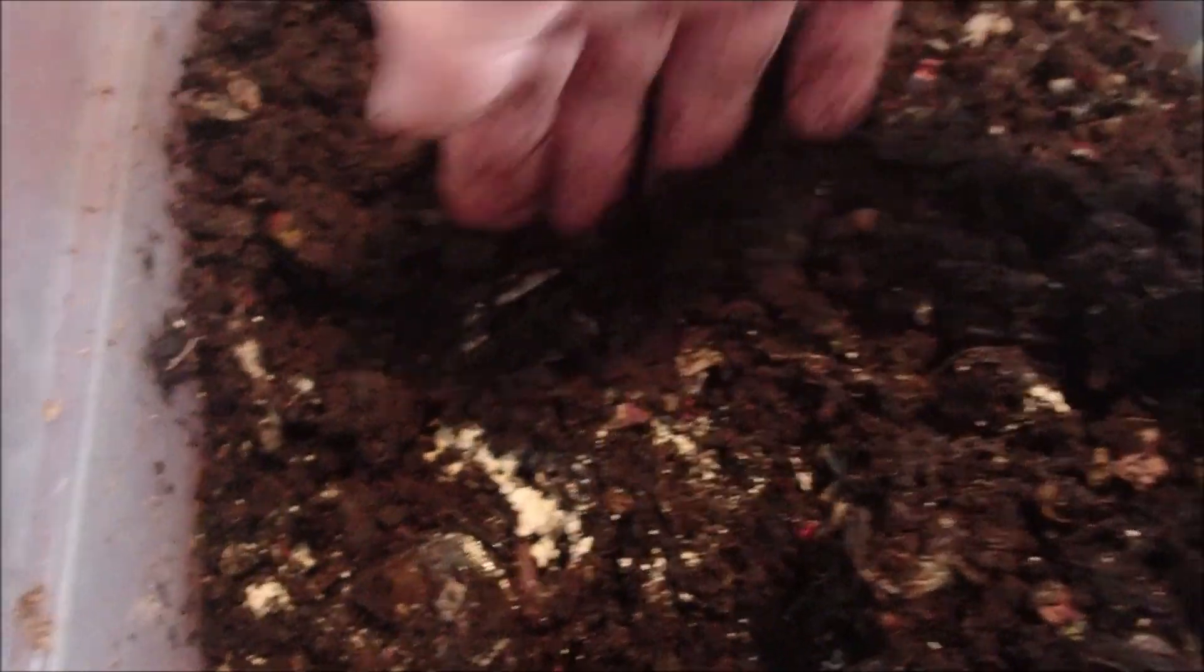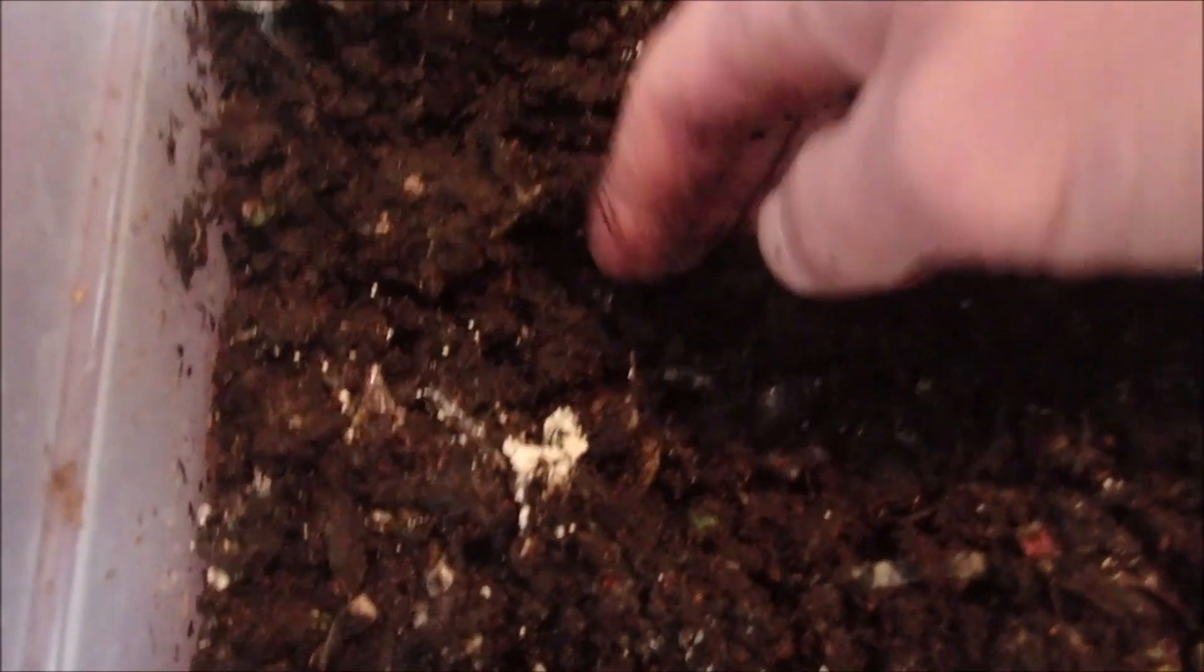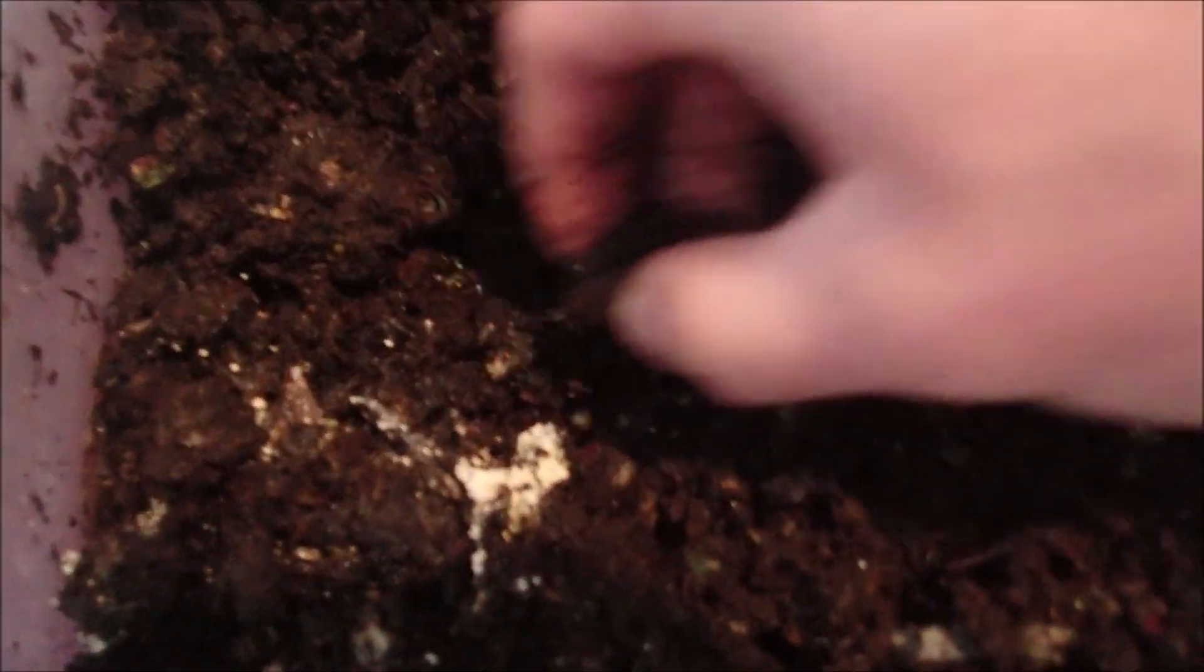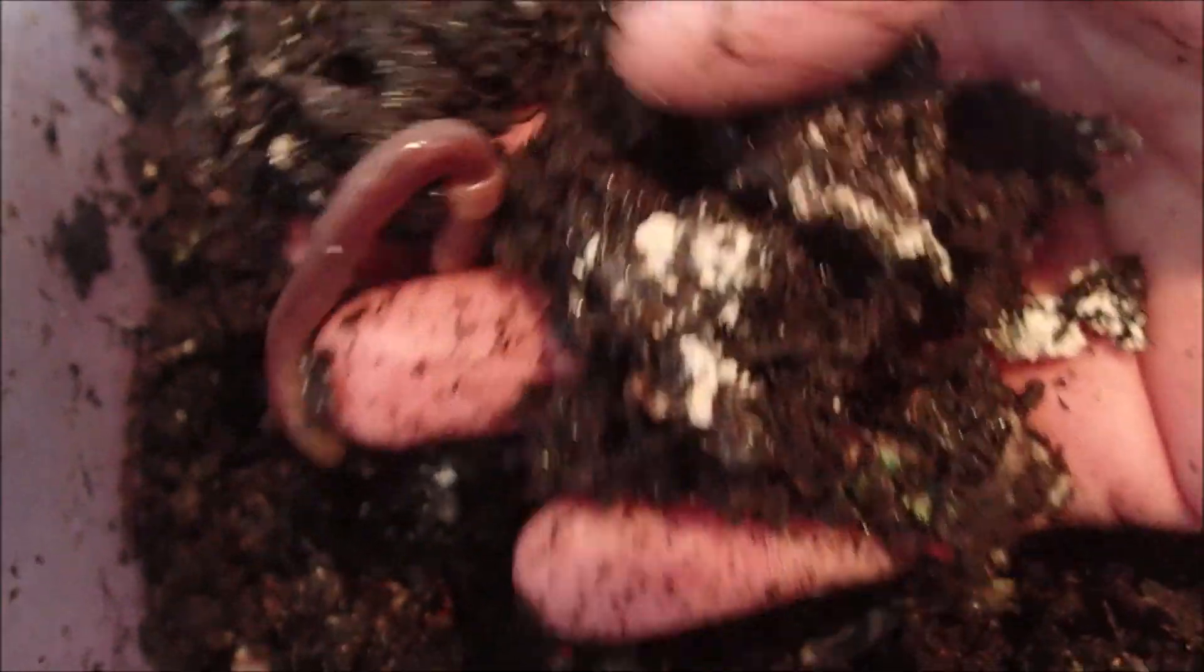There's one right there. There's a cocoon. There's another cocoon. One that's a little red. There's one that's green. So one good size. There's a baby right there. There's another baby.